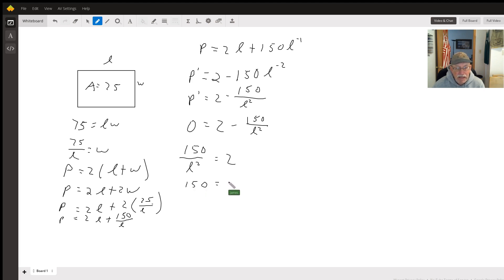So I get 150 equals 2 times L squared. Divide both sides by 2, I get L squared equals 75. Take the square root of both sides, I get L equals the square root of 75.